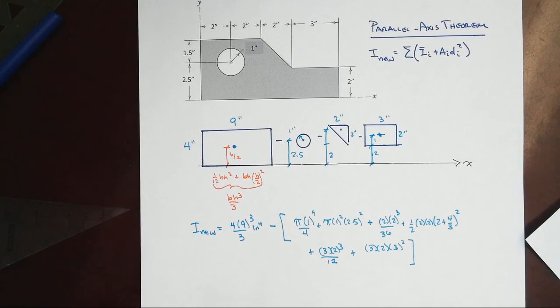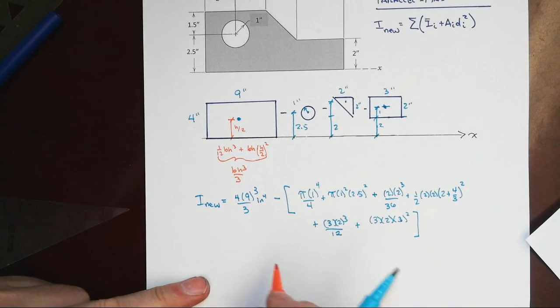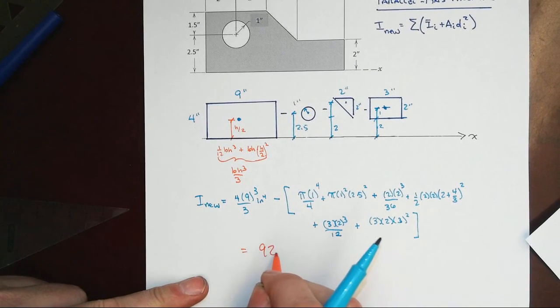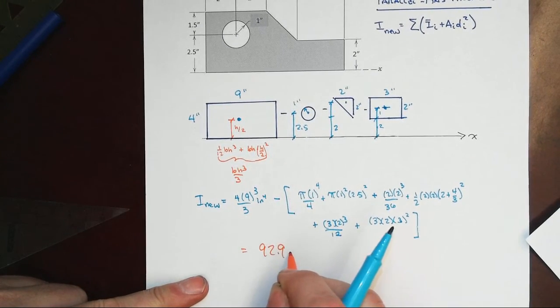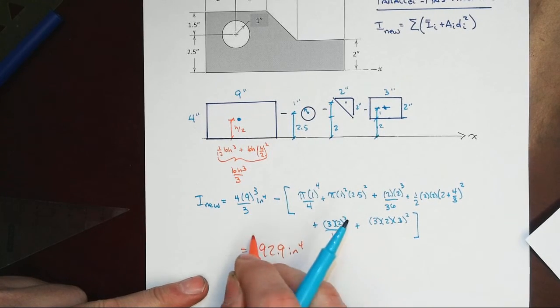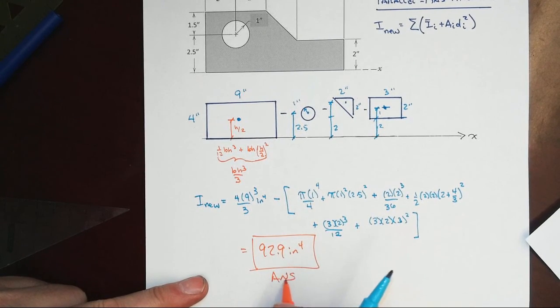When you work that out, you will get 92.9 inches to the fourth as your answer.